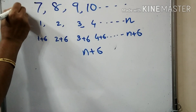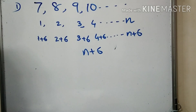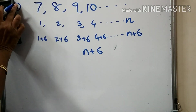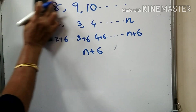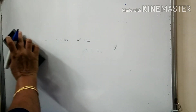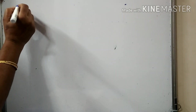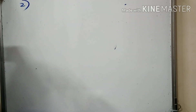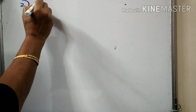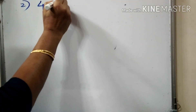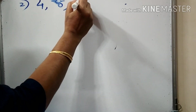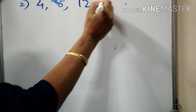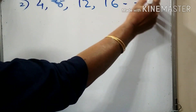This is one example. In the same way, this is n plus 3 in algebraic form, or n plus 4: 4, 8, 12, 16, etc.